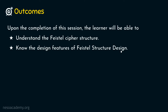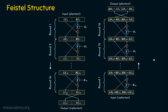Let's see the Feistel cipher structure. This side is the encryption portion and this side is the decryption part. This left-hand side structure is the structure proposed by Feistel. The input is the plain text and the output is the cipher text. The plain text is split into two parts: the left-hand side part and the right-hand side part.